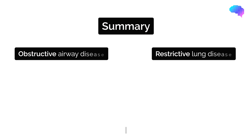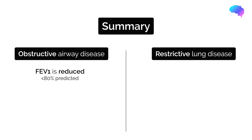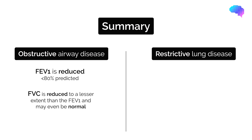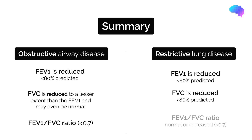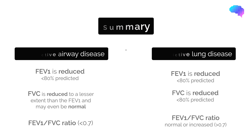Let's summarise the spirometry results. In obstructive airway disease, there is a significantly reduced FEV1 to less than 80% of the predicted value. The FVC is reduced though to a lesser extent than FEV1 and can even be normal. Overall, the FEV1 to FVC ratio is less than 0.7. In restrictive lung disease, FEV1 is also decreased to less than 80% of the predicted value. The FVC is significantly reduced to less than 80% of the predicted value. Overall, this results in an FEV1 to FVC ratio that can be normal or even raised to above 0.7.